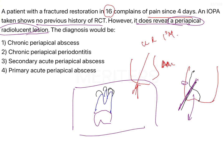Among the four options, chronic periapical periodontitis is a chronic lesion, meaning it would have been present for weeks or months. Since the patient's symptoms are only four days old, this can be easily ruled out.